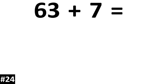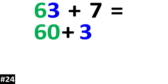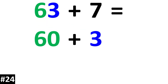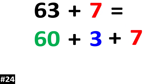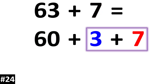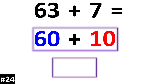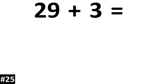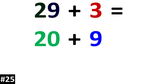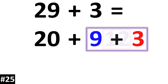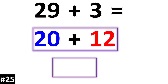63 plus 7. 63 is the same thing as 60 plus 3. If we add the 7, 3 plus 7 is equal to 10. 60 plus 10 is equal to 70. And lastly, 29 plus 3. 29 is the same thing as 20 plus 9. If we add the 3, 9 plus 3 is equal to 12. And 20 plus 12 is equal to 32.